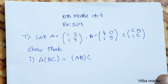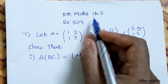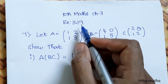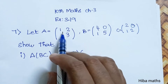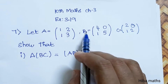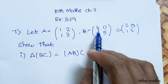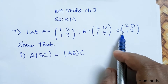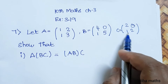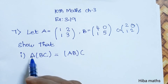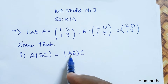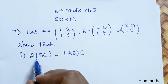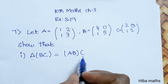Hello students, welcome to Hiba, class 10 standard, Chapter 3, Exercise 3.19, 7th question. Let A = [1,2; 1,3], B = [4,0; 1,5], C = [2,0; 1,2]. Show that A(BC) = (AB)C. We will prove LHS = RHS.